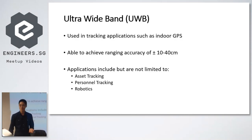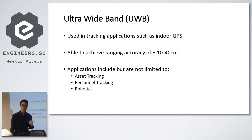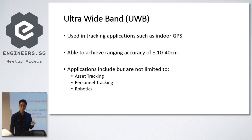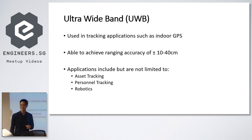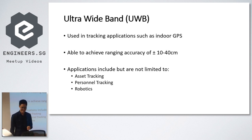To explain a little bit more about Ultra Wideband: Ultra Wideband is used in tracking applications like indoor GPS. It's able to achieve around plus or minus 10 to 30 cm accuracy, and its applications include asset tracking, personal tracking, or robotics.